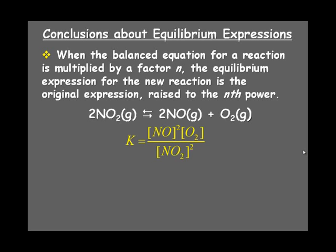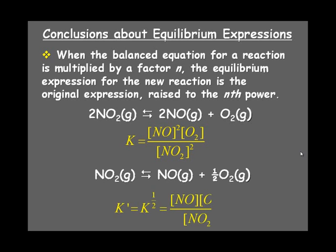so again, products over reactants all raised to the power of their coefficients, if we suddenly divide all of the coefficients by 2 or multiply all of the coefficients by 1 half, which is the same thing, we end up with a reaction that looks like this, and then that means we would take our original K and we would take it to that factor power. So we would take it to the 1 half power.